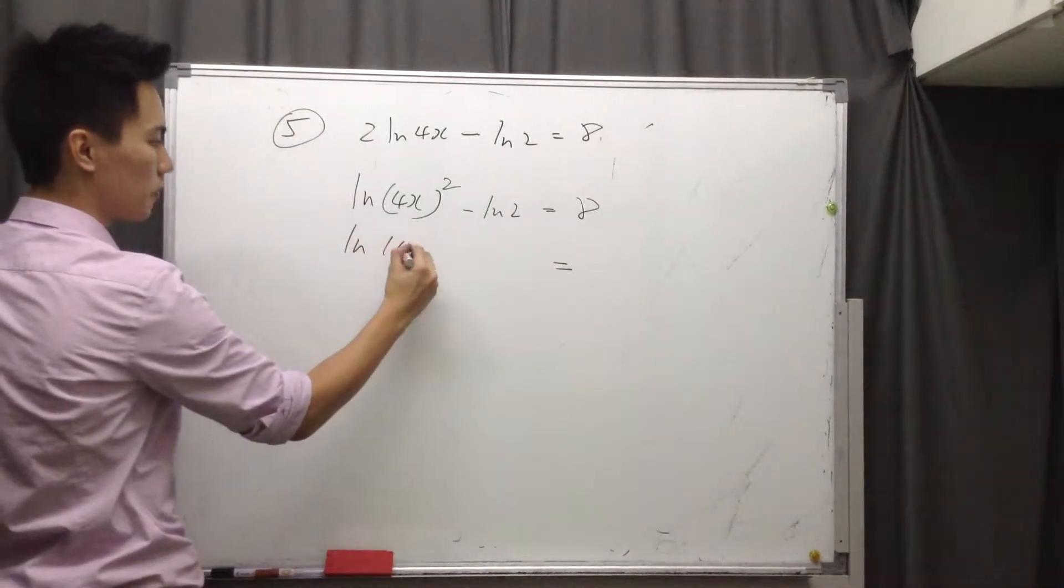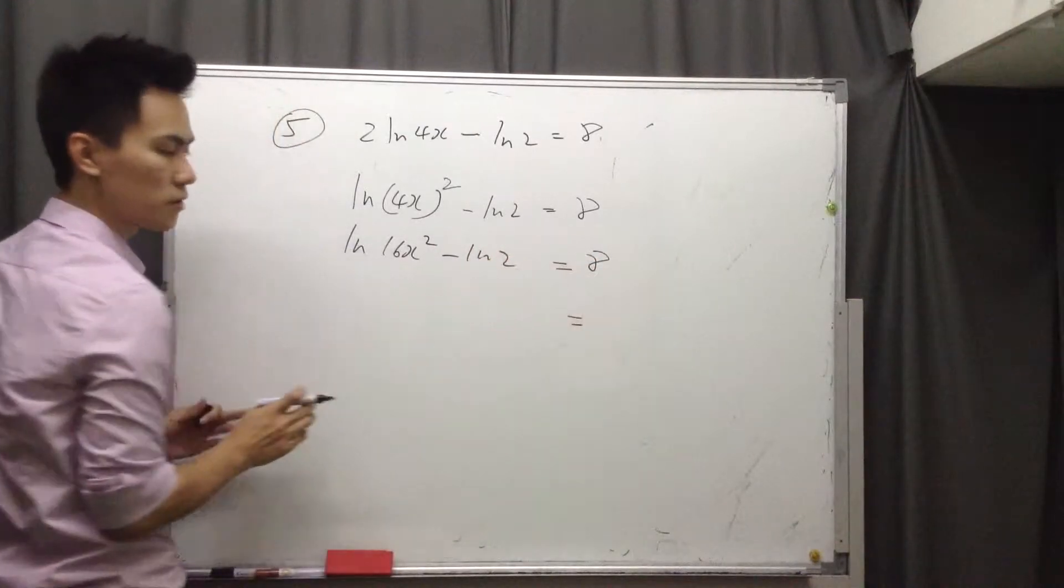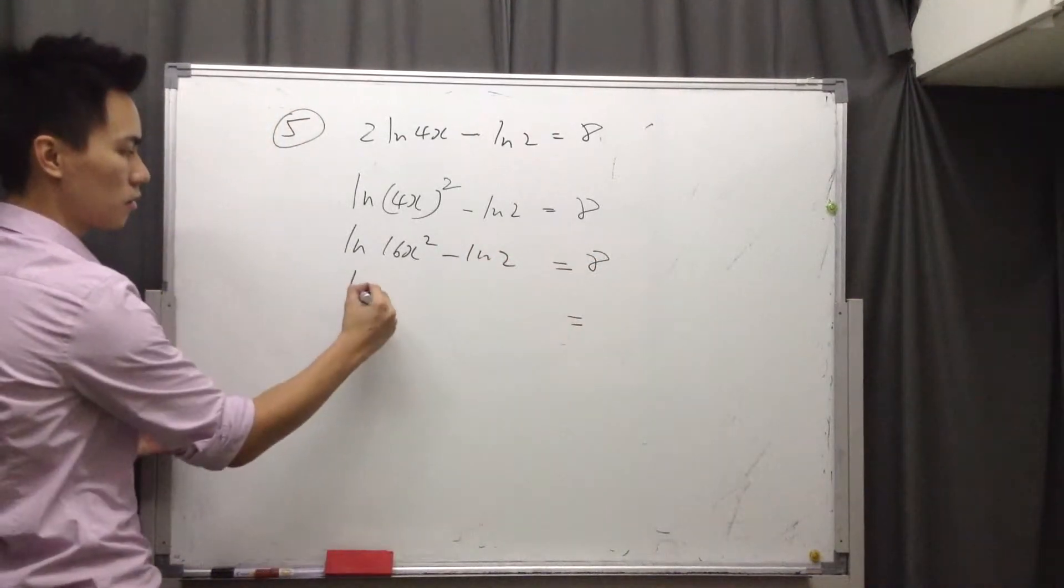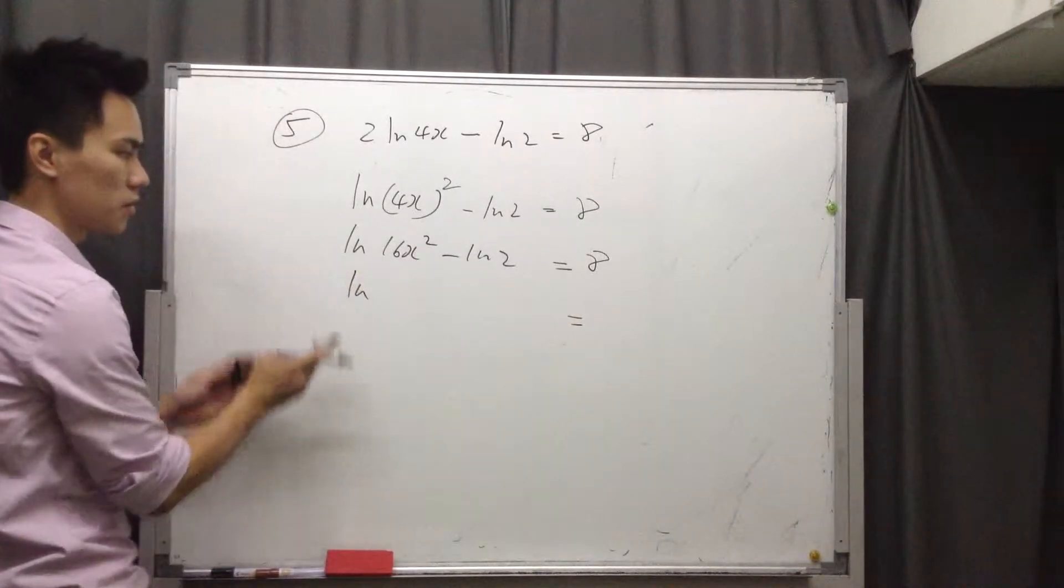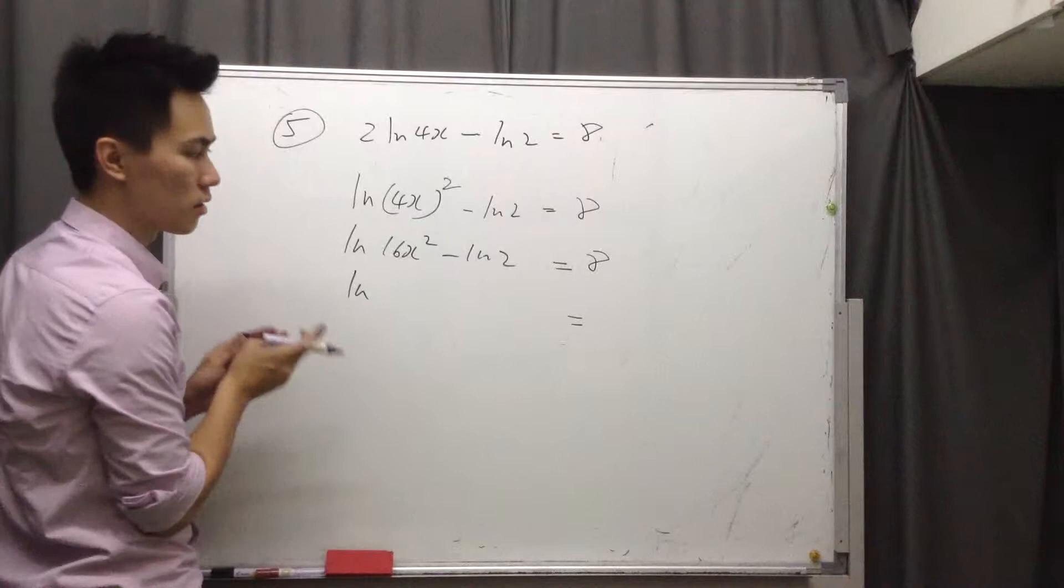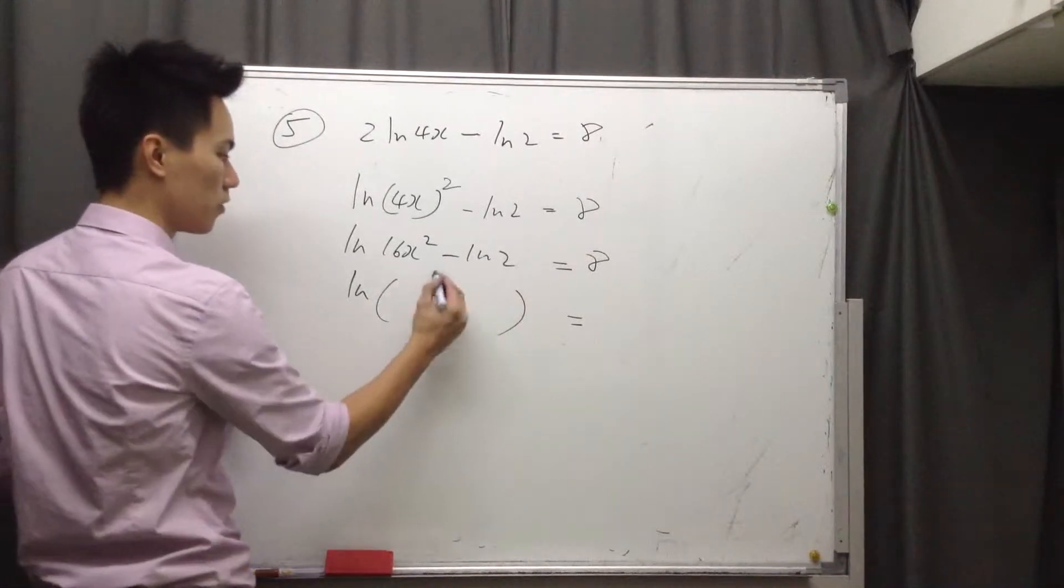And you will have 16x squared minus ln 2x equals 8. So this is ln a minus ln b, which is also equal to log a minus log b, so that's why you can apply log a over b, the rule.